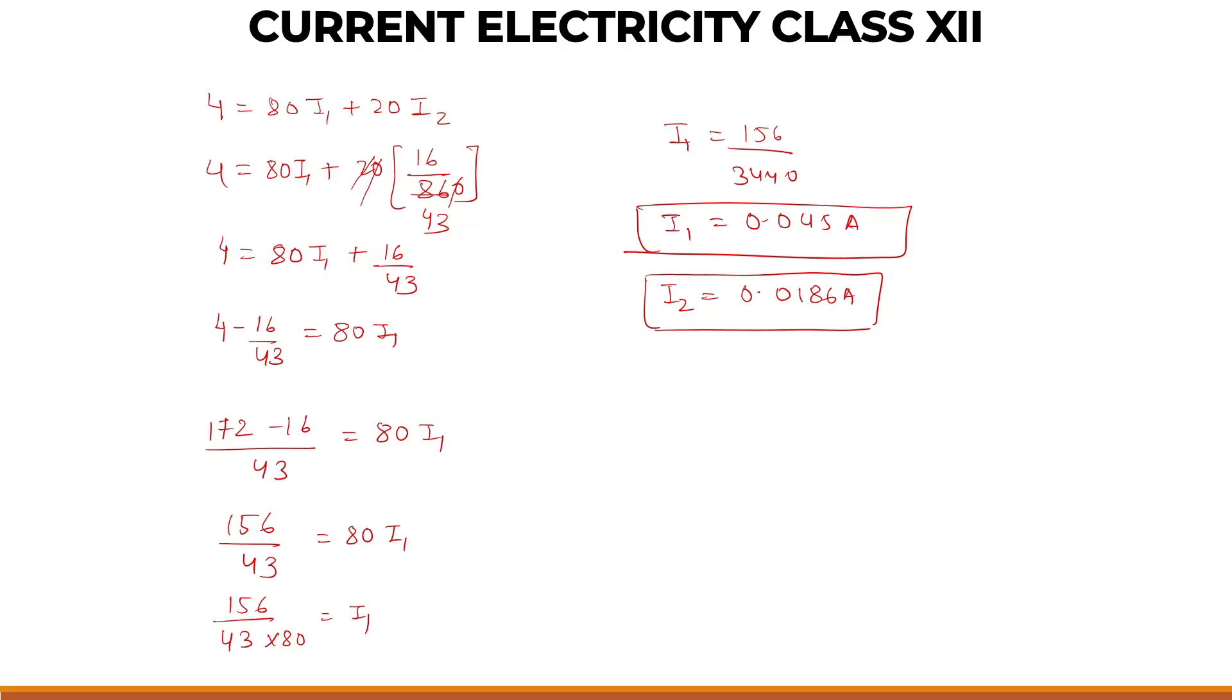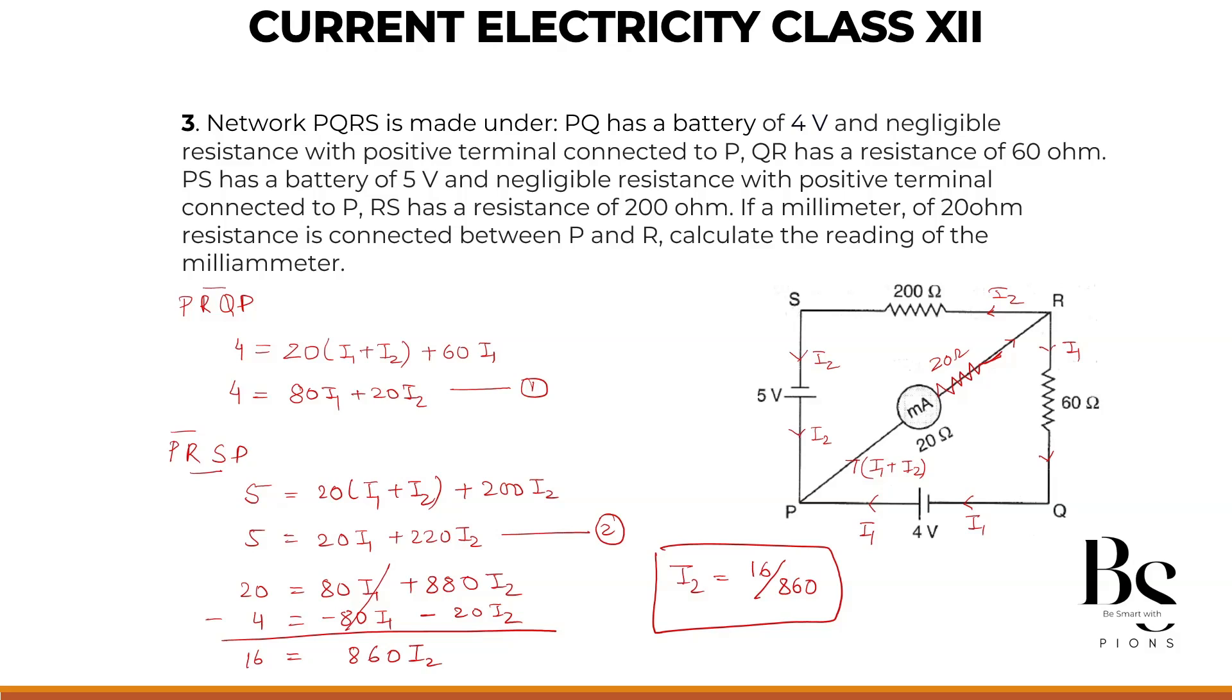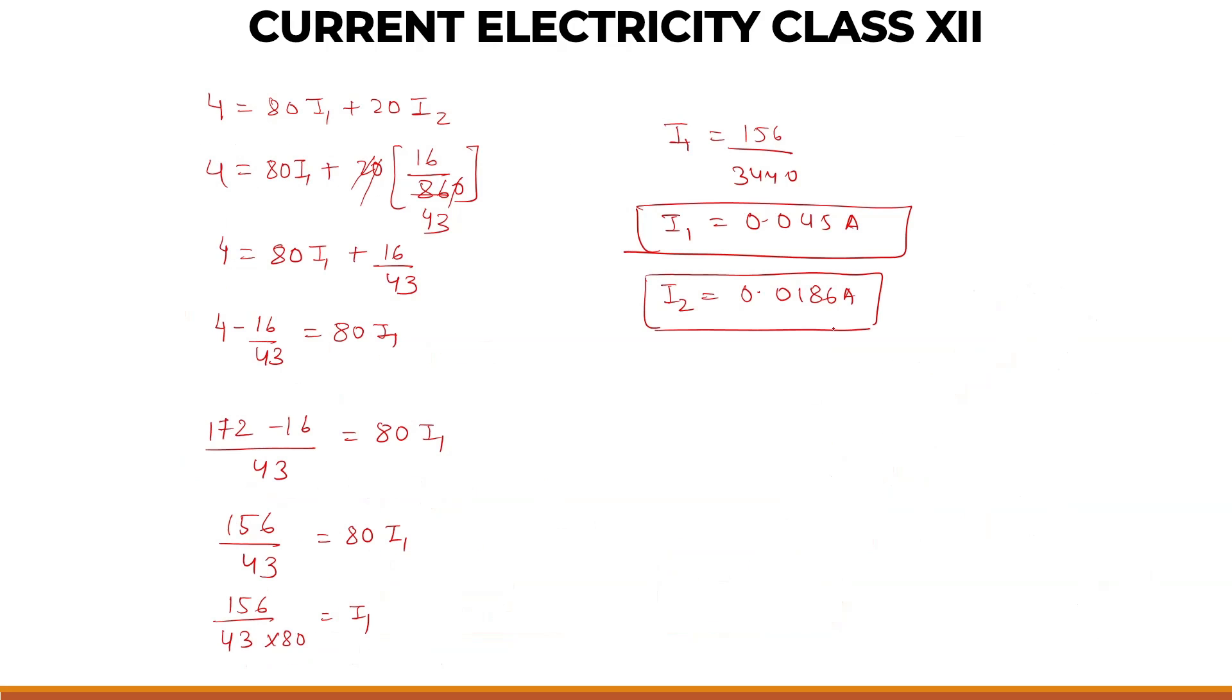What is the current going through the milliammeter? That will be adding I1 plus I2 as per the diagram. So current going will be I1 plus I2. That will be 0.0186 plus 0.045, that is 0.0636.